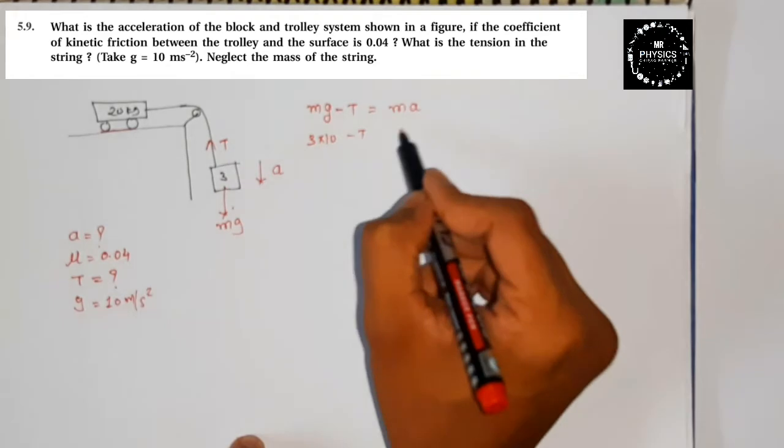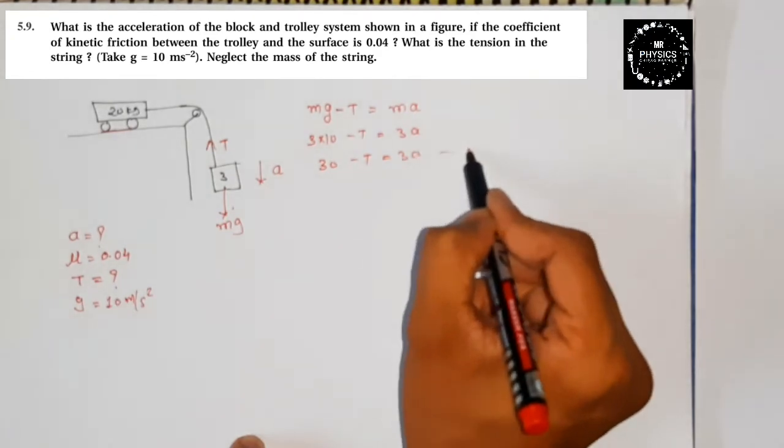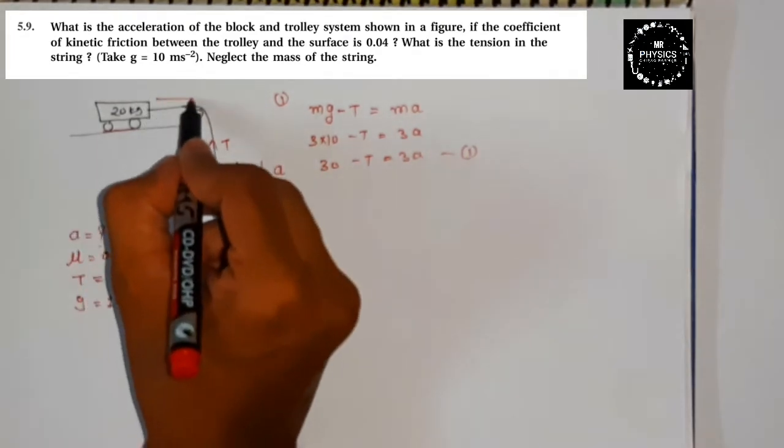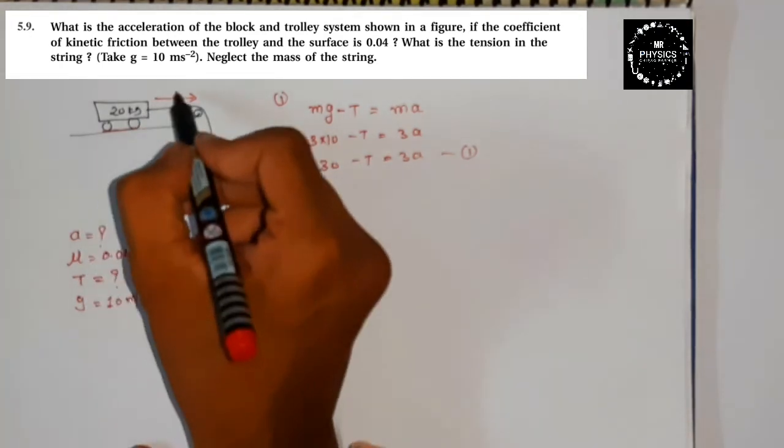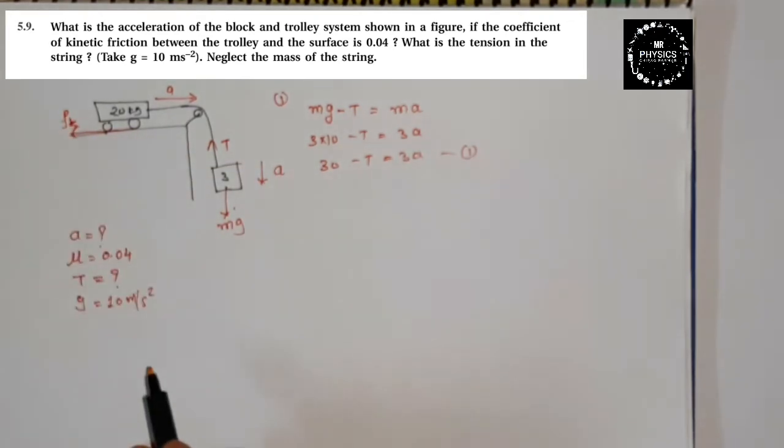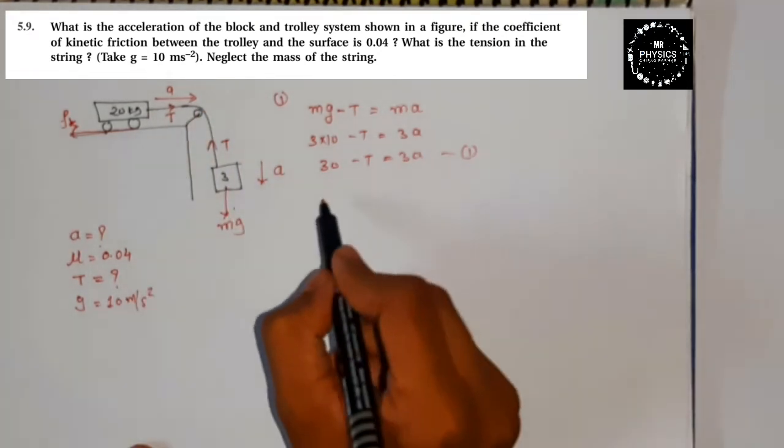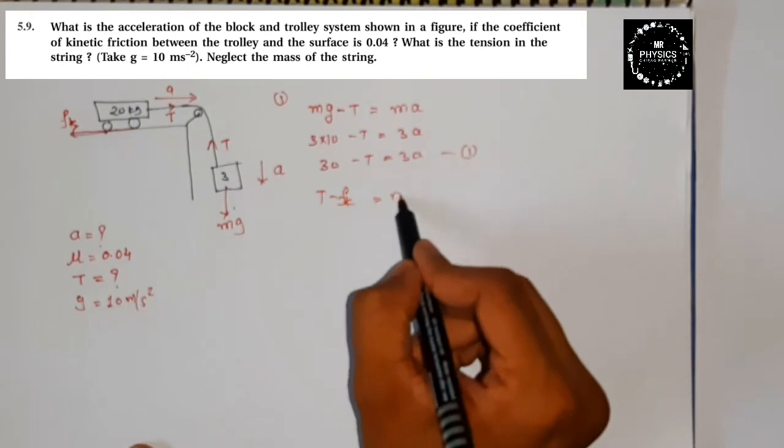3 into 10 minus T is equal to 3a. So this is equation one for the first case. Now downward, trolley acceleration is this direction. Trolley acceleration is this direction which is in opposite direction. So I can see kinetic friction fk and string which will be T, which will be this direction positive. Uske opposite force fk and here compulsory ma.